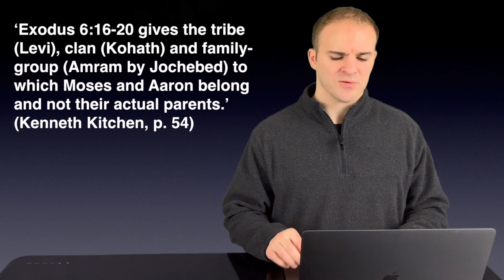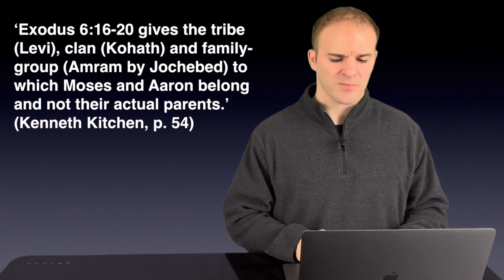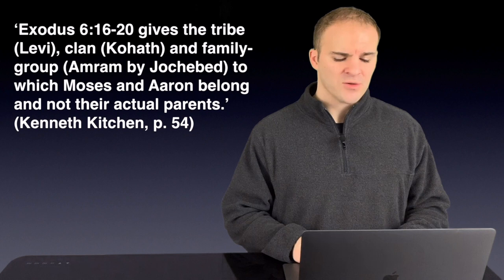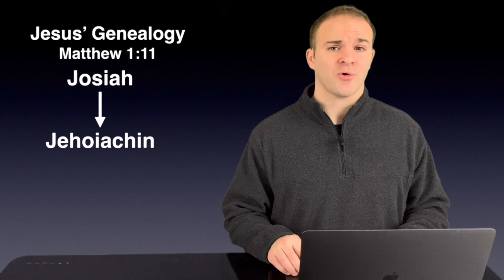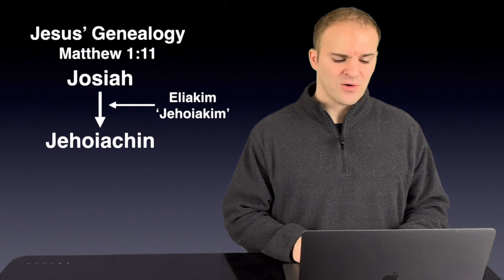Kenneth Kitchen argues that Exodus 6:16-20 gives the tribe Levi, the clan Kohath, and the family group Amram by Jochebed, to which Moses and Aaron belong, but they're not their actual parents. So, according to Kitchen, Exodus 6 is an incomplete genealogy. And this is possible because Jesus' genealogy in Matthew is incomplete. They go from King Josiah to Jehoiachin by skipping directly over Jehoiachin, his actual dad. So, his view does have biblical potential.